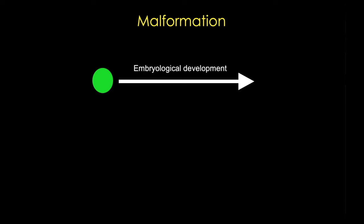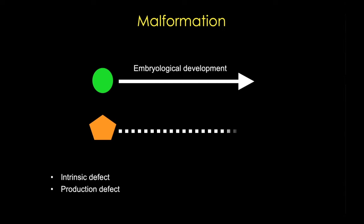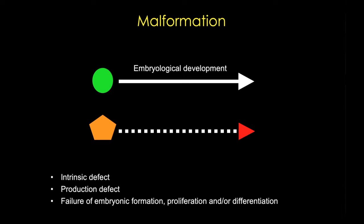So let's start with a malformation. The green circle here represents a primordium, which will grow into a structure, a tissue or an organ, represented by this white arrow. A malformation is an intrinsic defect — it's considered a production defect since something happens to alter the developmental process. This could be a failure of embryonic formation, proliferation, or differentiation. It usually happens early in development, most commonly in weeks 3 to 8.